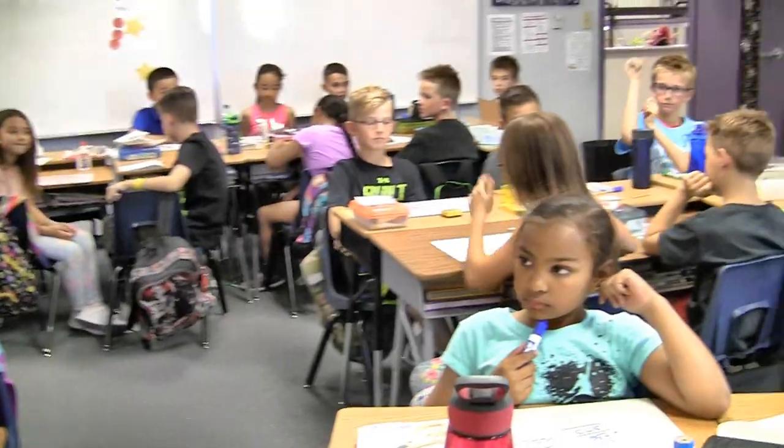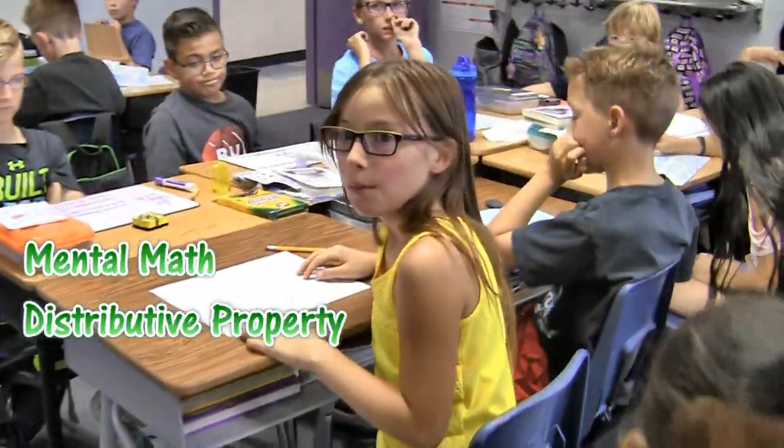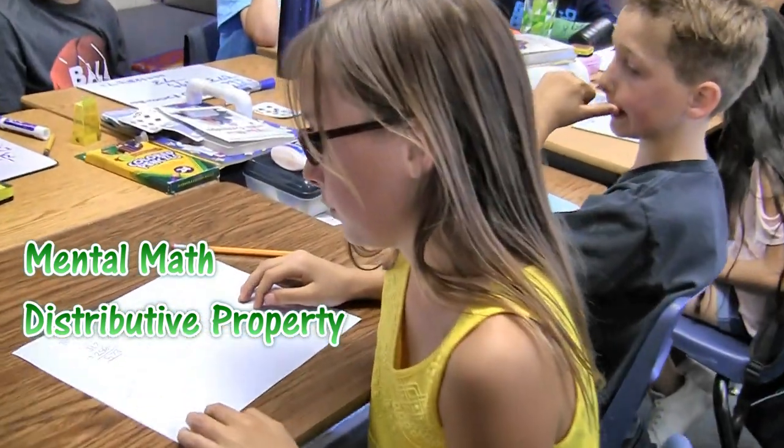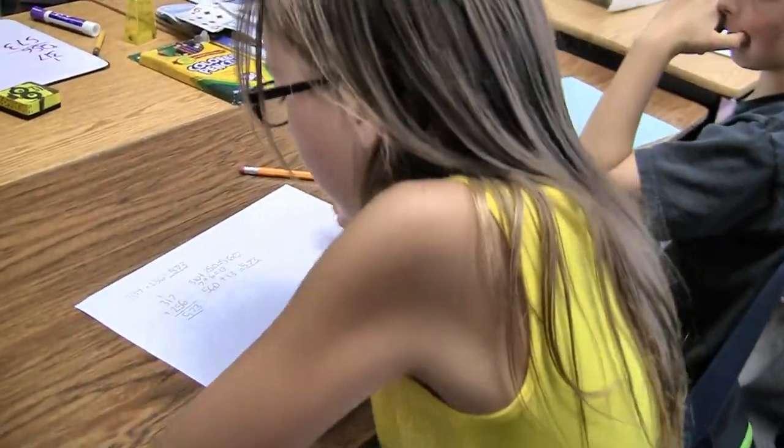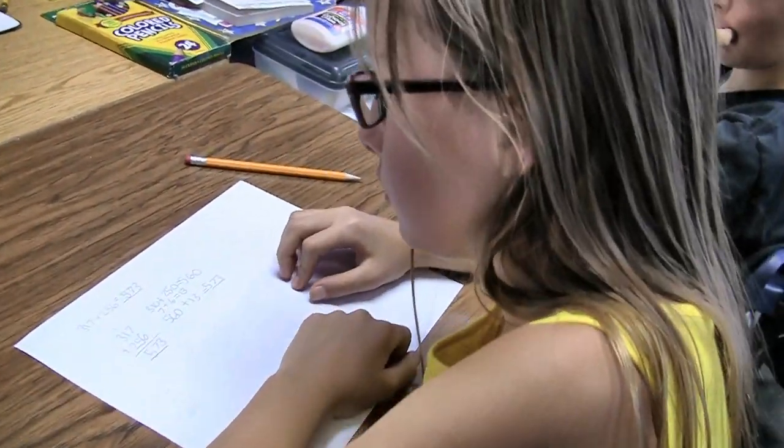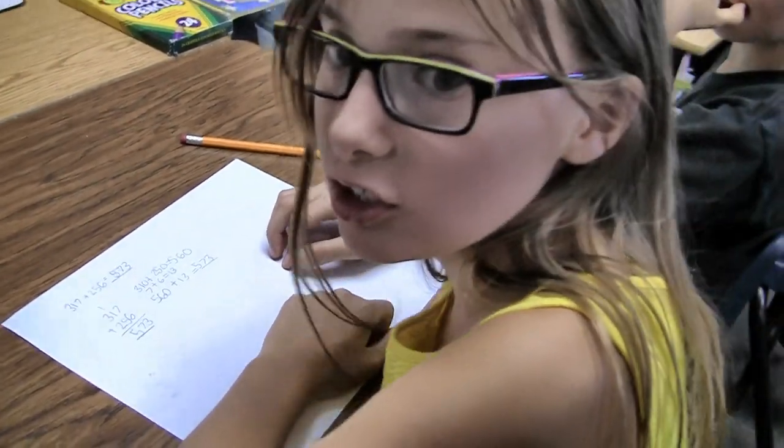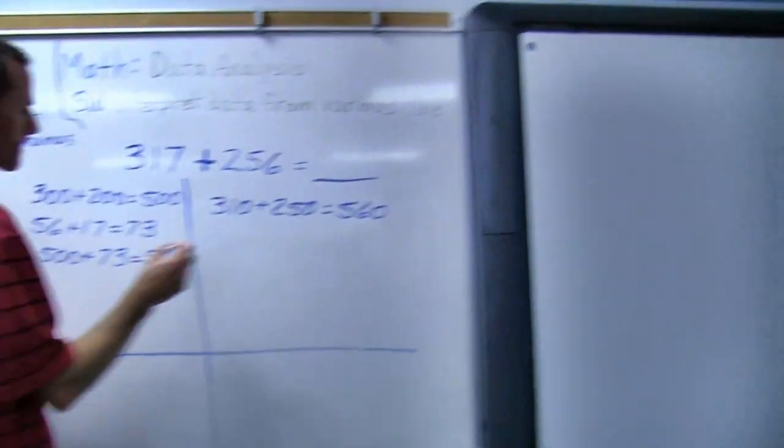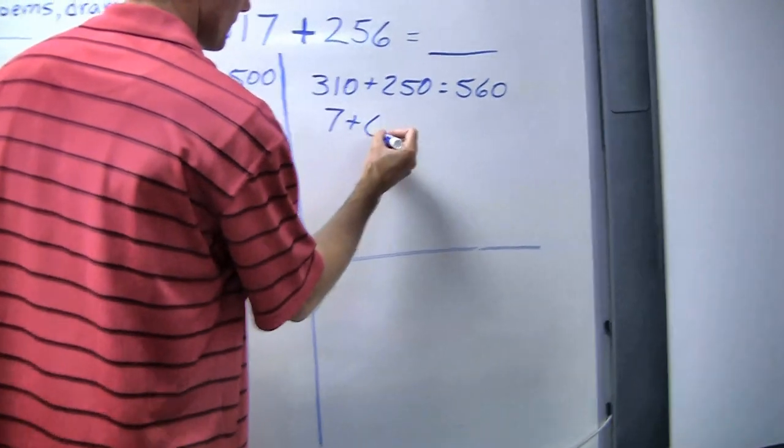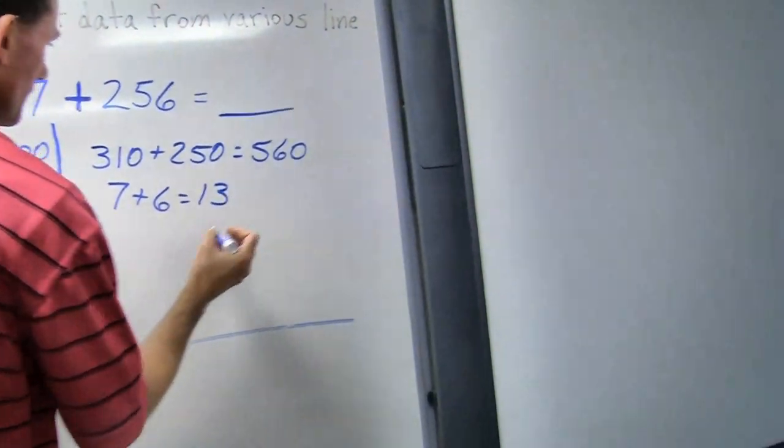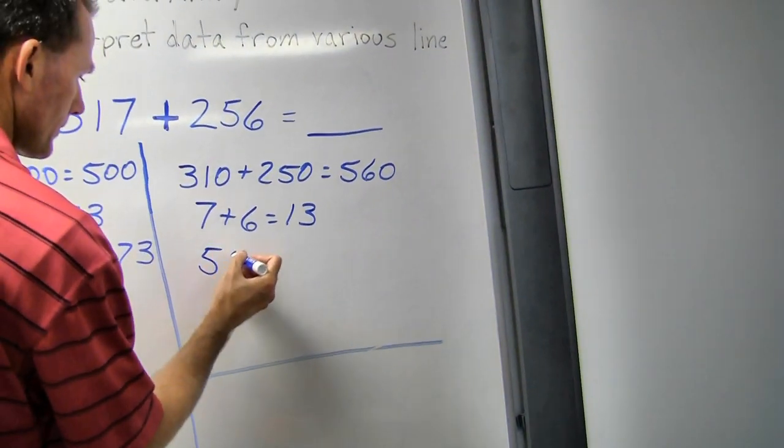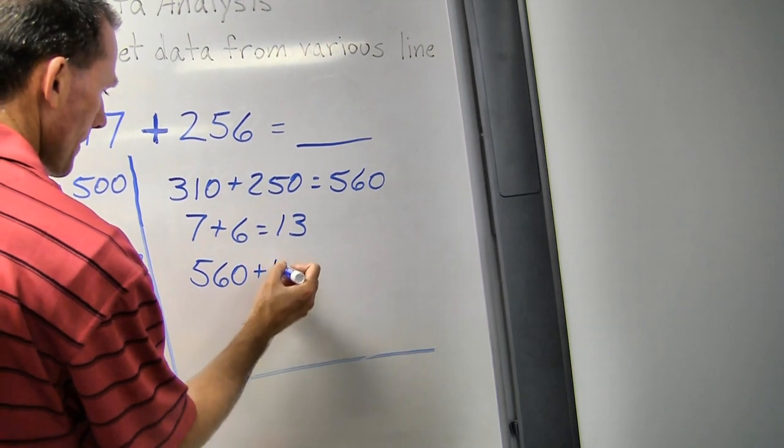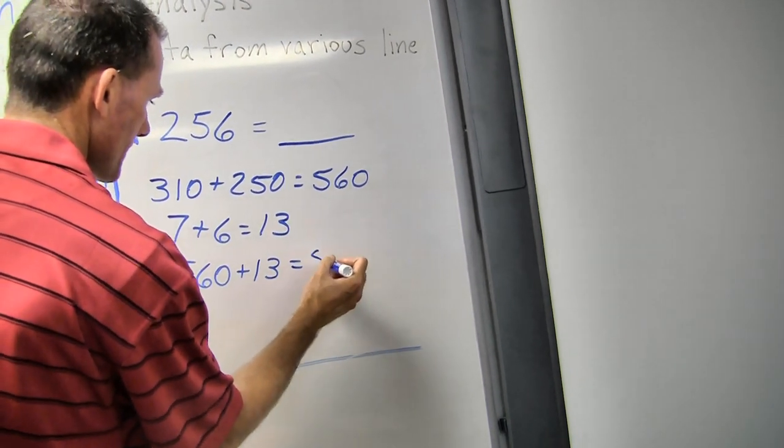Another volunteer to share a strategy. So what I did is mental math distributive property. So 310 plus 250 equals 560. 7 plus 6 equals 13. 560 plus 13 equals 573. That's my answer.